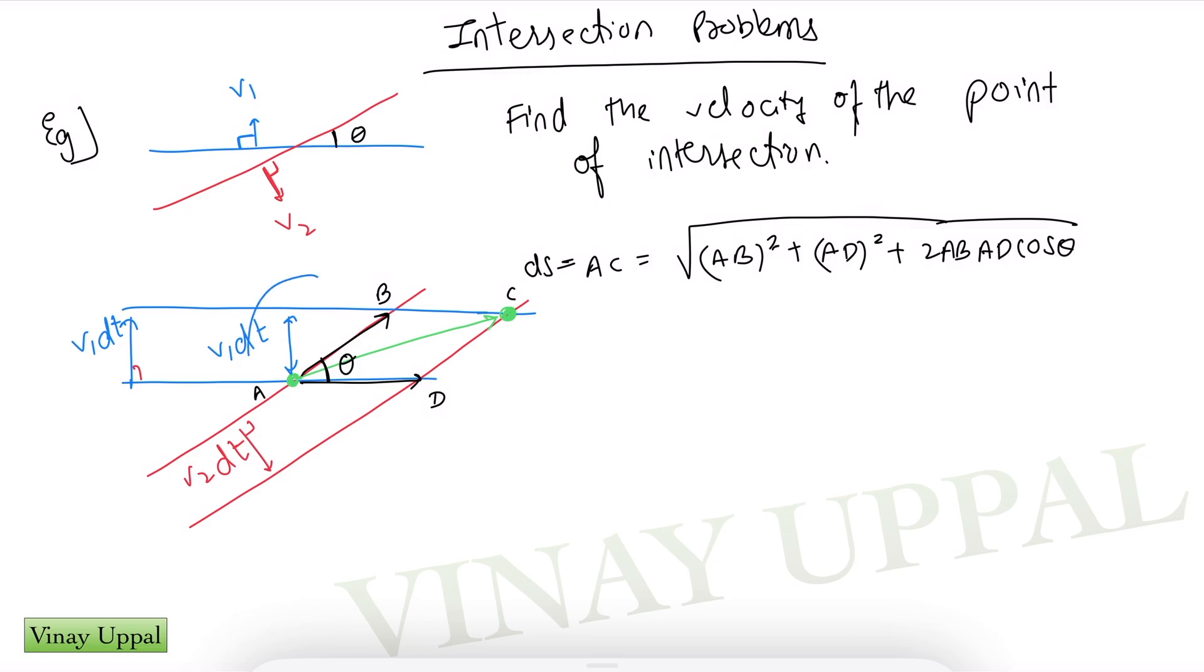Therefore if I look at this triangle, I can simply write AB as v1 dt divided by sin theta from this triangle. AB is the hypotenuse in that triangle. Similarly, AD will also therefore be v2 dt divided by sin theta, same logic. And all we have to do is substitute AB and AD here.